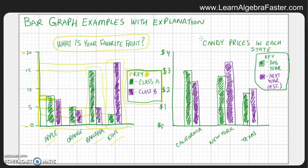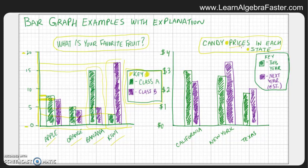We'll start at the top with the title. This graph has a title of "Candy Prices in Each State" — states in the USA. So we're expecting to measure price, in this case a dollar value, and the groups are the states. This title is really good because it talks about prices, which is what you can count, and state, which is how you group things.